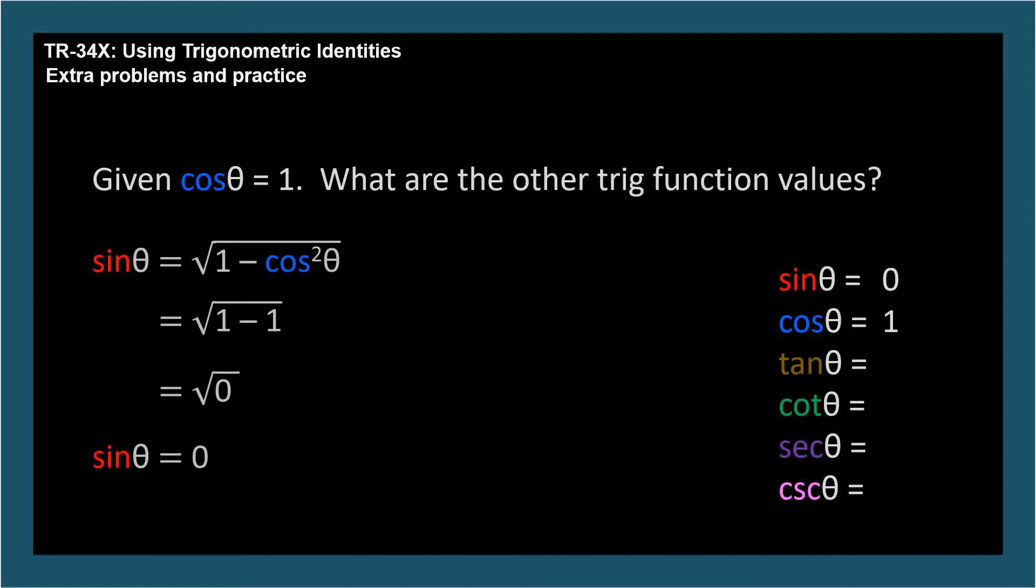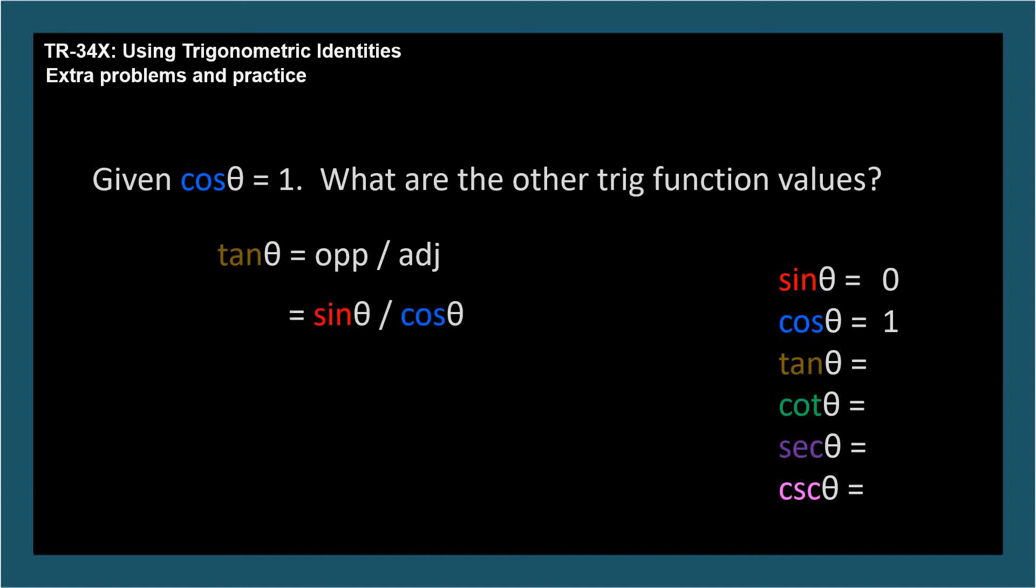Once we know sine and cosine, everything else is easy, because the other four trig functions all depend directly on sine, cosine, or both. Sohotoa reminds us that tangent equals opposite over adjacent. This corresponds to sine over cosine, which for theta is 0 over 1, so tangent theta equals 0.